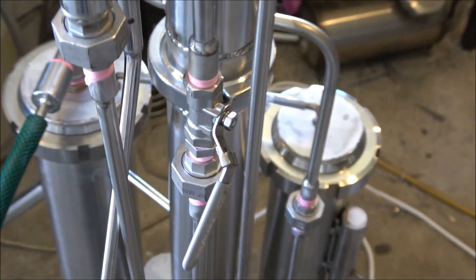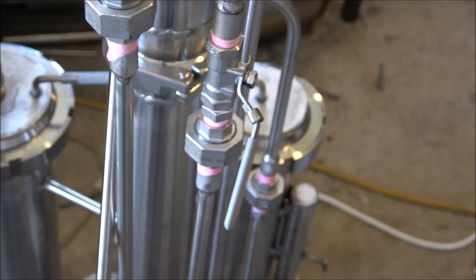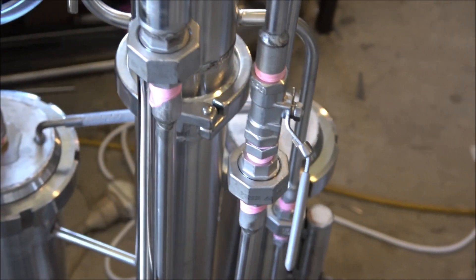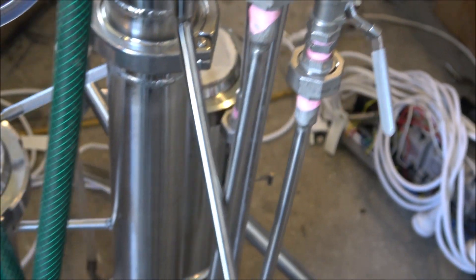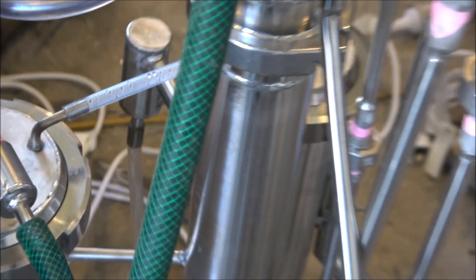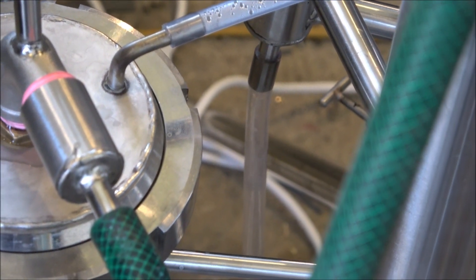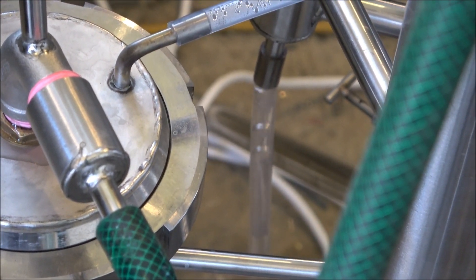Now here you can see the wash flow control valve. Here's the control tube of the steam generator. You can observe some water in here.